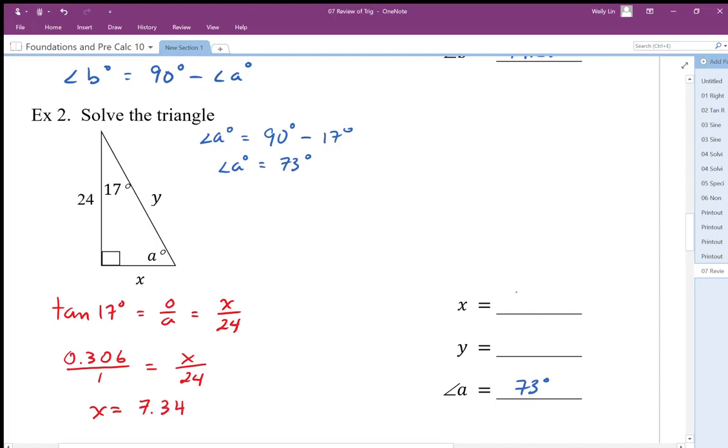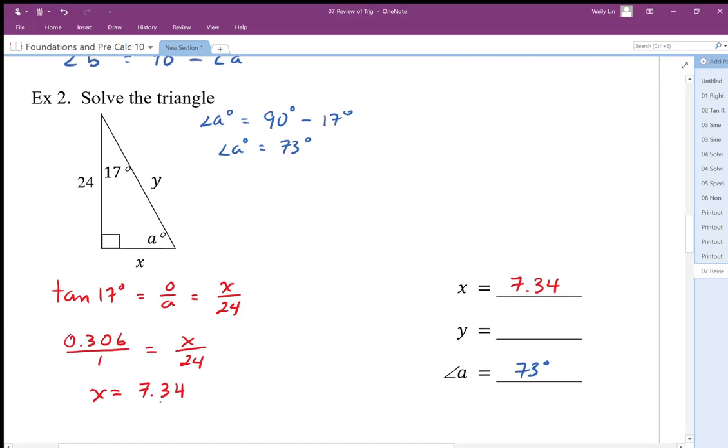And again, if you're off by a little bit from rounding, no big deal. As long as you're somewhere around low sevens, that's pretty good. So I've solved for x. This is 7.34.